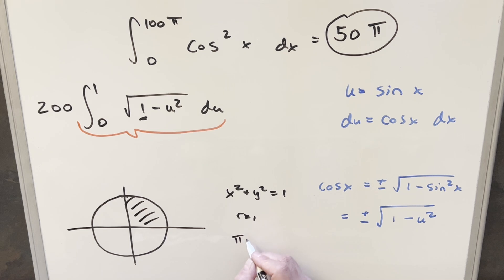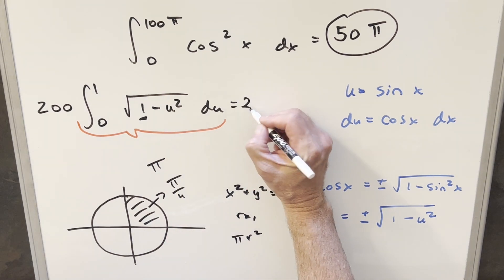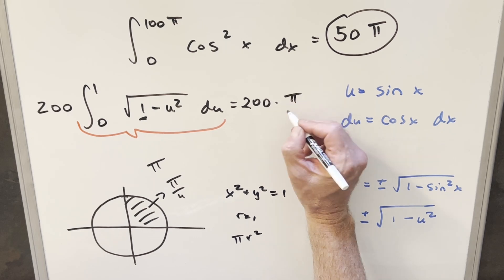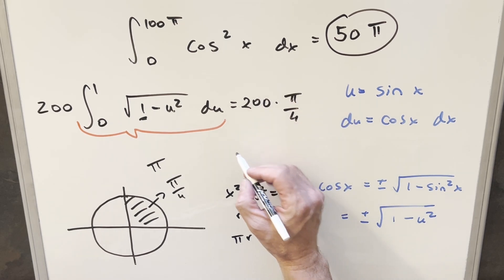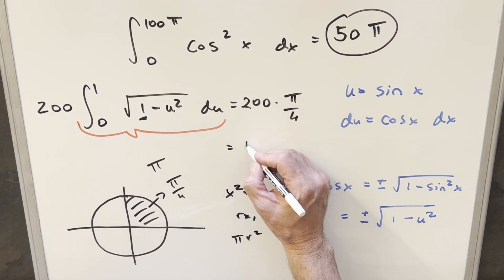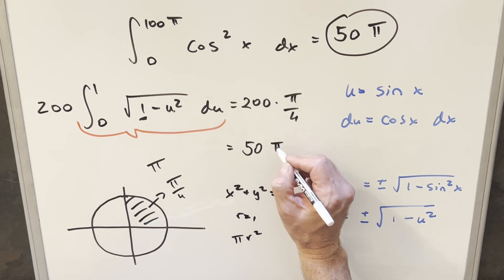Area of a circle, π r squared. So if the radius is 1, the whole circle is going to be π. But if we just want the first quadrant, this is just going to be π over 4. So putting this together, we're going to have 200 times π over 4, divide 4 into 200. And so for the solution to this, you just get 50 times π.